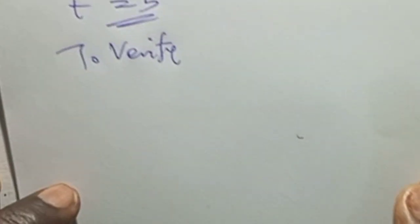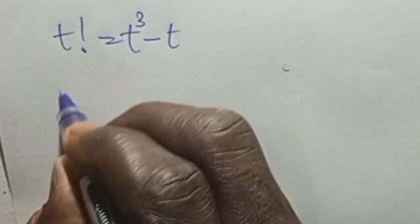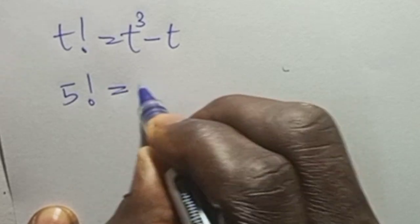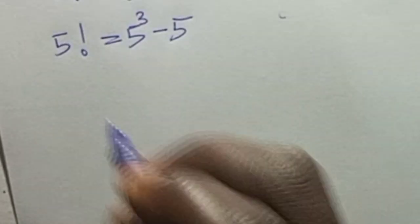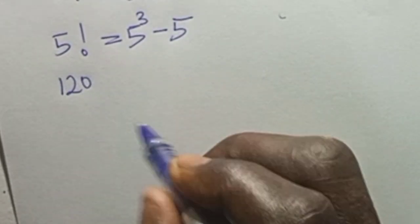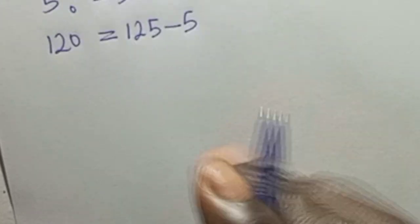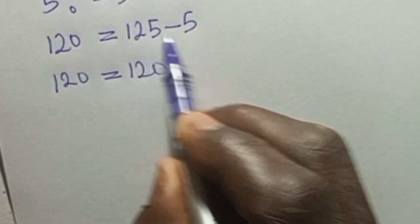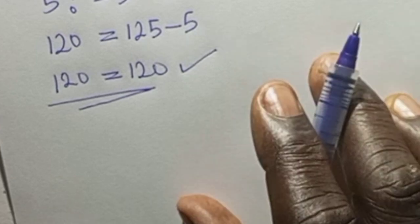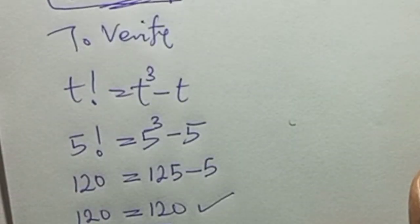To verify: our original equation is t factorial equals t cubed minus t. Substituting t equals 5: 5 factorial equals 5 cubed minus 5. We get 120 equals 125 minus 5 equals 120. The value t equals 5 satisfies the equation. Thank you for staying tuned, bye bye.